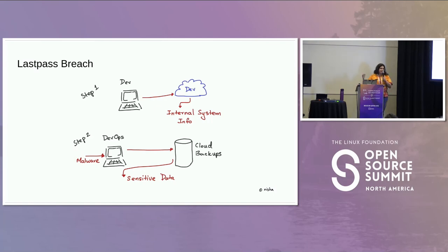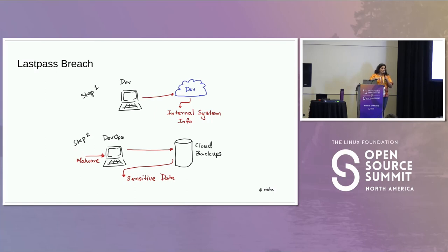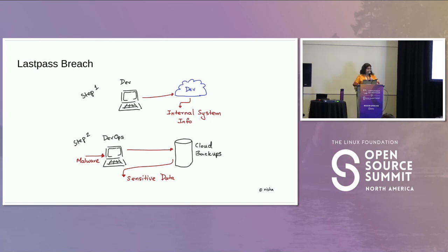When you have website information about what users are using — the username and the URL — you can craft a phishing attack saying something like, 'are you trying to link these two accounts?' The more information a hacker has about a user, the better they can craft a phishing email. That's the LastPass breach.